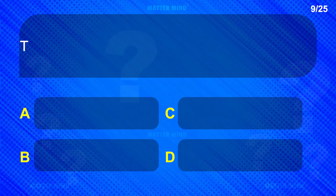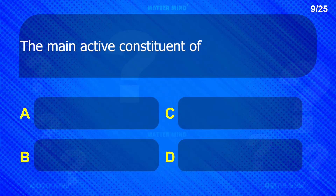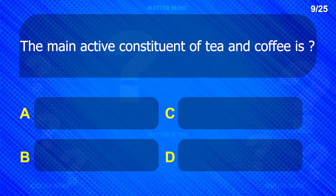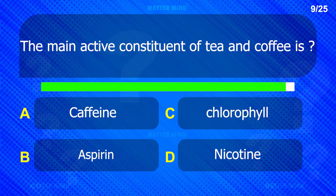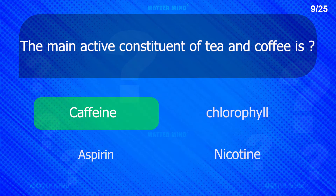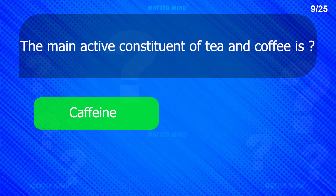The main active constituent of tea and coffee is: Caffeine.